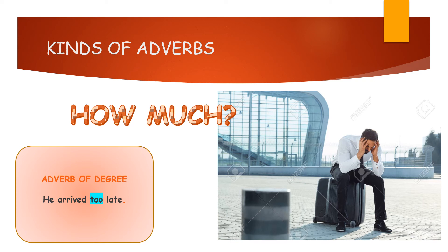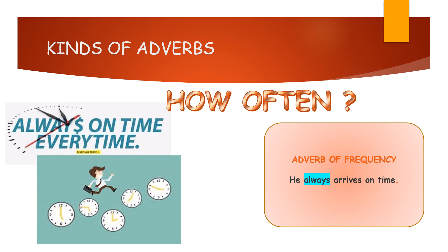After how and how much, now it is 'how often'. We have the adverb of frequency, which tells us how often something happens. He always arrives on time — he always submits his work on time. There are some students who are always late for online classes. He never arrives on time. That is the adverb of frequency. Punctuality is very, very important, students — practice that.